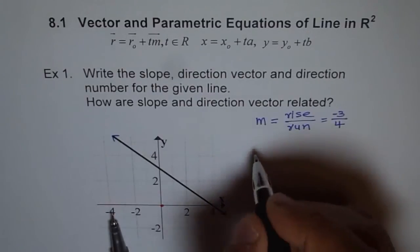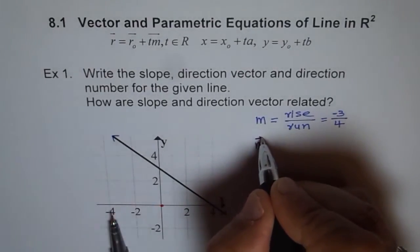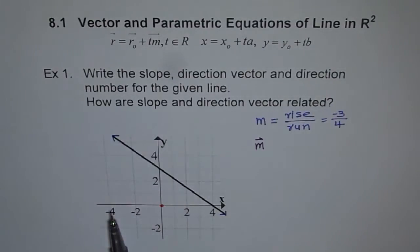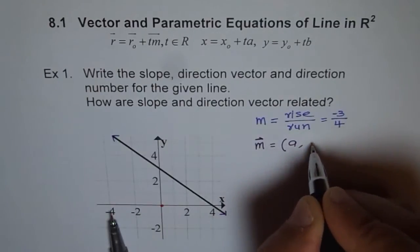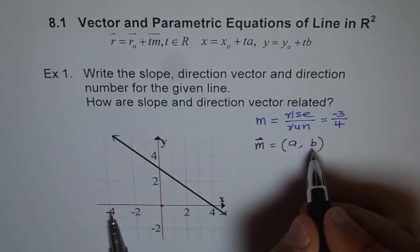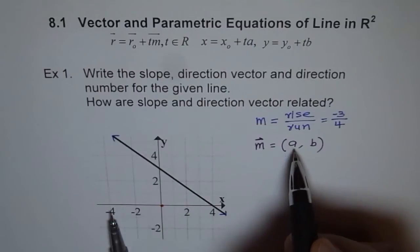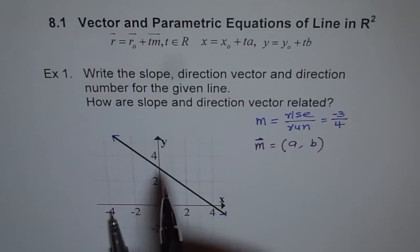Let me represent the direction vector with a symbol. Since it is a vector, we write M with an arrow on top — I may write a dash to indicate it's a vector. This direction vector is written in two components: A and B. A represents the horizontal x value and B represents the vertical y value. These are called the direction numbers.